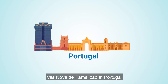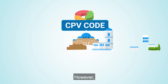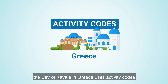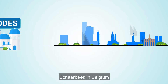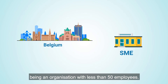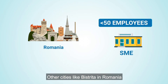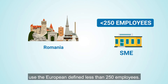Villanova de Familiacao in Portugal uses CPV codes as a way of categorizing sectors. However, the city of Kavala in Greece uses activity codes. In terms of SMEs, Skarbek in Belgium uses their own definition of an SME, being an organization with less than 50 employees. Other cities, like Bistrița in Romania, use the European defined less than 250 employees.